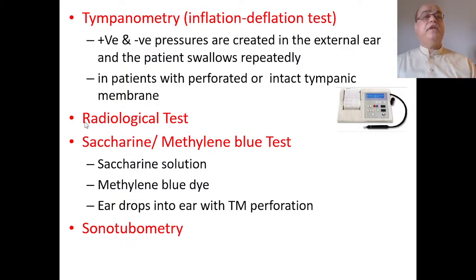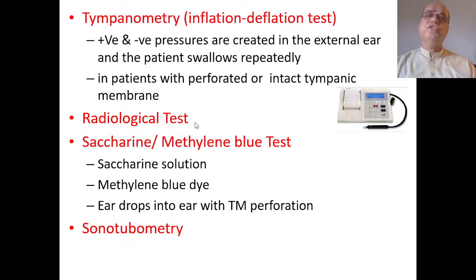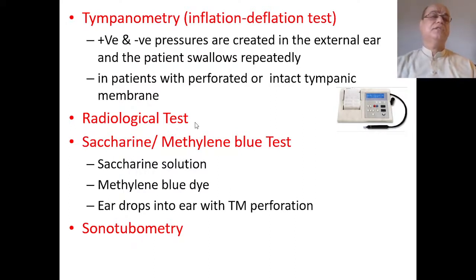Radiological tests are used when malignancy is suspected — for example, nasopharyngeal carcinoma obstructing the nasopharyngeal end of the Eustachian tube, adenoids, or skull base tumors. In such cases, a CT scan of the skull base is the preferred investigation.